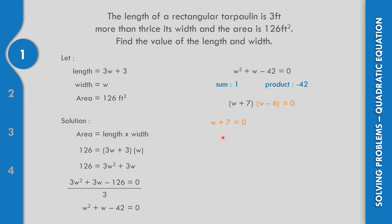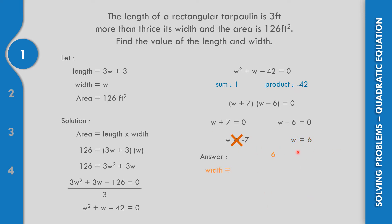The first value gives W equals negative 7. The second gives W minus 6 equals 0, so W equals 6. Since there is no negative width, W equals negative 7 is incorrect. Therefore W equals 6.